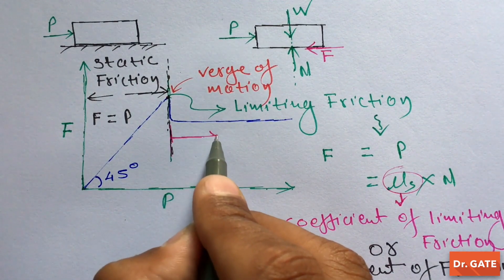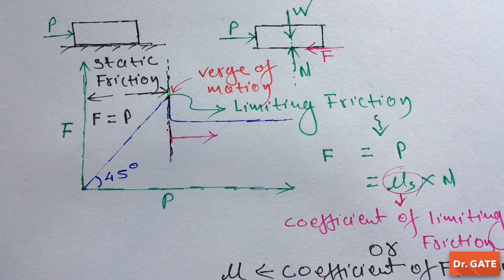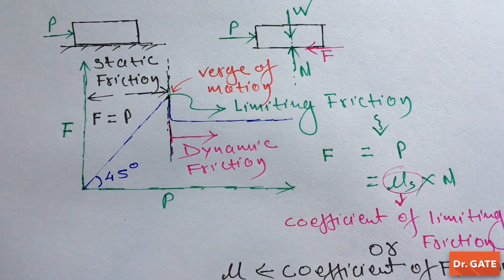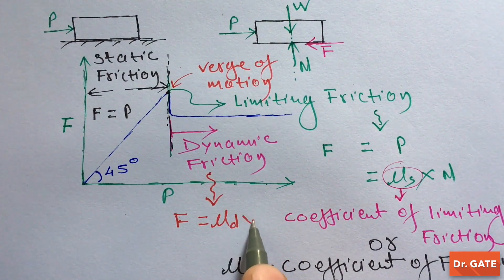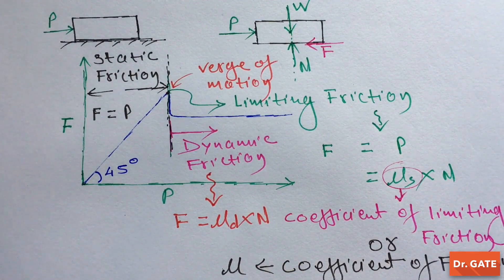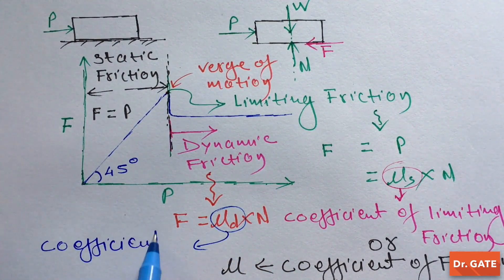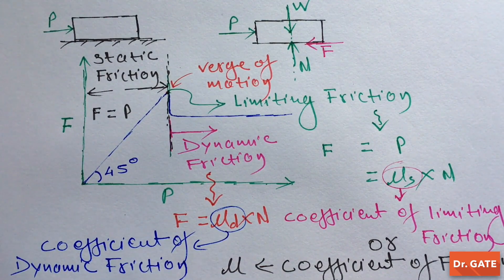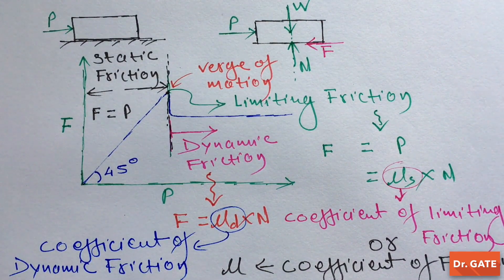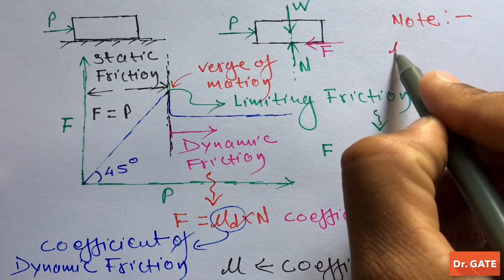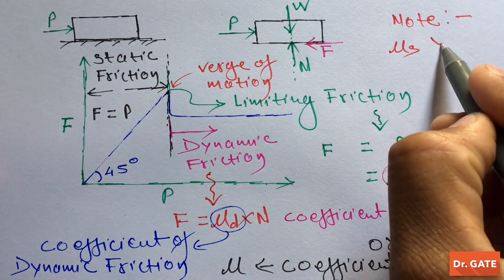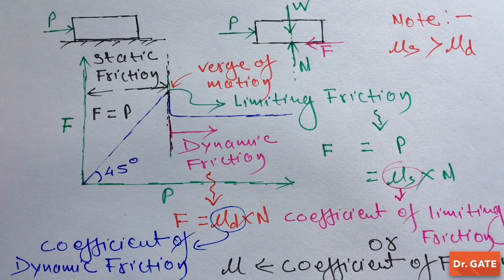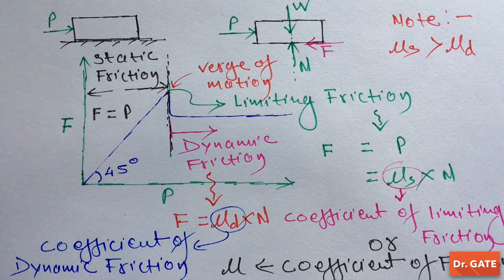In the region where the block is in motion, the friction is known as dynamic friction, and mathematically it is μd × N, where μd is the coefficient of dynamic friction and N is the normal reaction. From this graph, one should note that the coefficient of static friction is always greater than the coefficient of dynamic friction. I think that's enough for theory — let's solve some numericals on it.